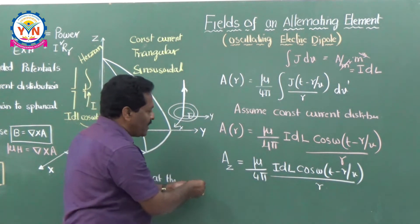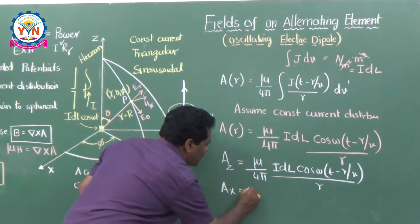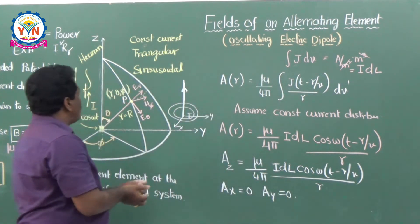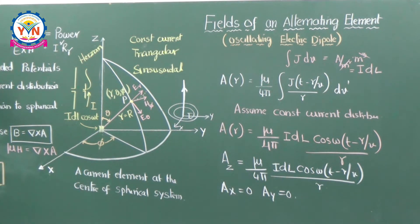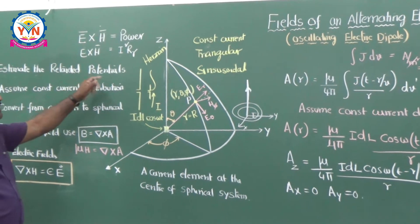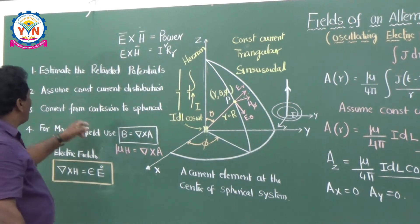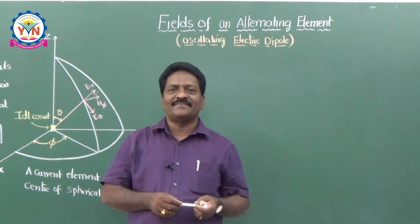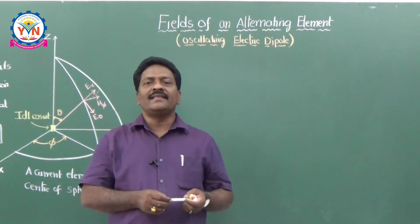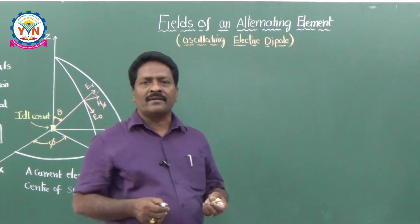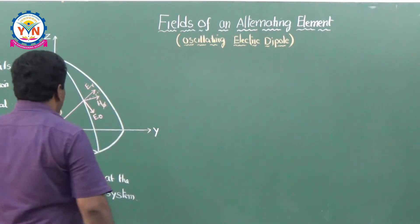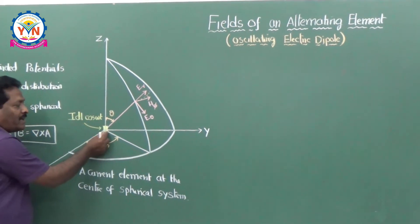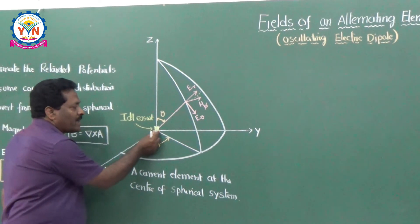So we have already completed the first step - estimated the retarded potentials. Now the third step is to convert from Cartesian to spherical coordinate system. Let us assume that the current element IDL is at the center of the spherical coordinate system, that means at the origin. We have A_R, A_theta, and A_phi to find from A_X, A_Y, A_Z using the coordinate transformation matrix.